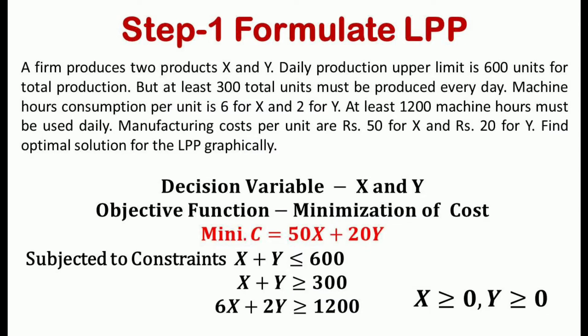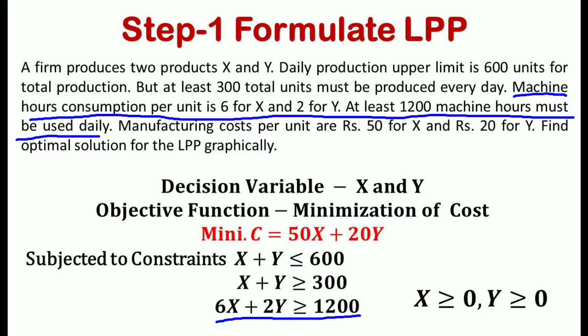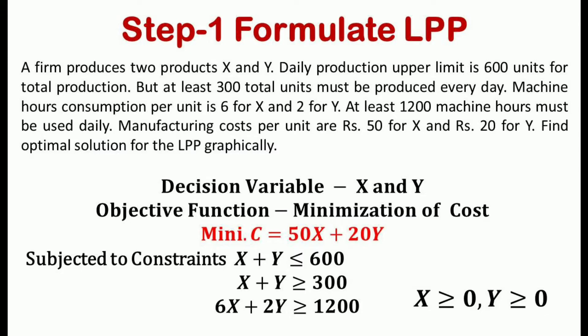The third constraint is that machine hours consumption per unit is 6 for x and 2 for y, and at least 1200 machine hours must be used daily. So it becomes 6x + 2y ≥ 1200. The non-negativity constraints state that the value of decision variables x and y are both greater than or equal to 0.